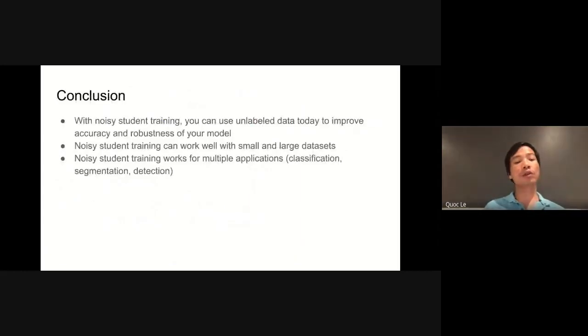So far, I have talked about the noisy student training method. The key idea in noisy student training is to use pseudo-labeled data generated from the teacher, and when training the student model, we need to add noise so that it becomes more robust than the teacher. I want to emphasize that with noisy student training, you can use unlabeled data to improve accuracy and robustness of your model quite easily.